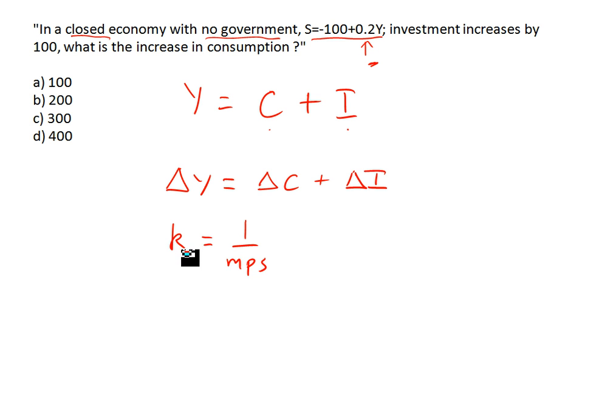So the multiplier, which is what will happen, what will be the level of national income that is generated once we increase the level of autonomous expenditure. So in this case we are going to increase investment by 100. So the multiplier here is equal to 1 over 0.2 is equal to 5.